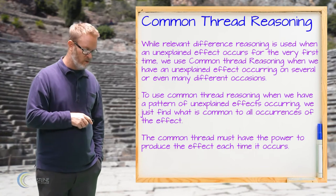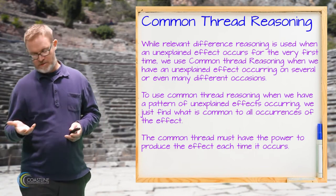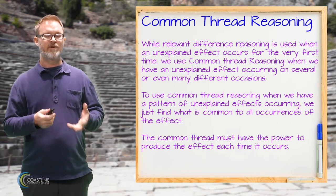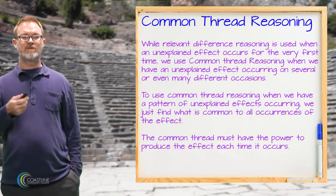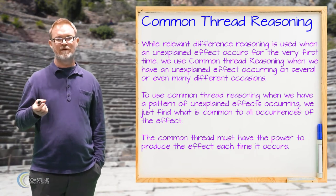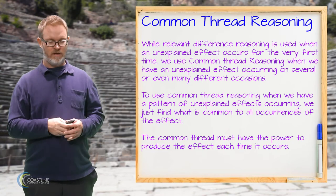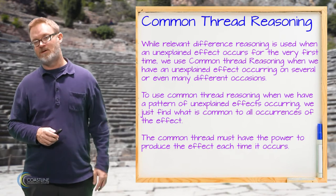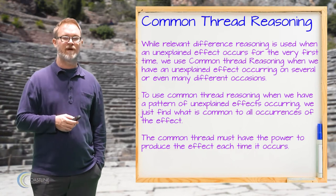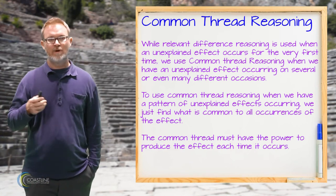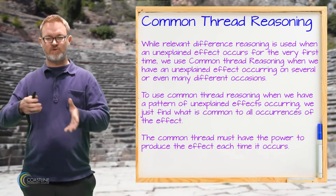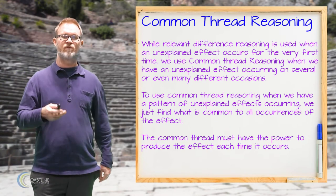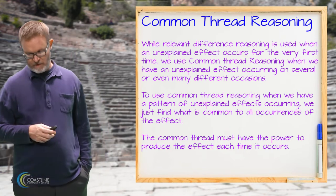The other type of causal reasoning is called common thread reasoning. Just like with relevant difference reasoning, you're looking to explain an effect you don't understand, but the difference is that with common thread reasoning it's a reoccurring effect — an effect that occurs over and over, many many times, and yet you still haven't determined the cause. If that effect is a good one, you want to produce more of it, and if it's not a good effect, you obviously want to get rid of it.